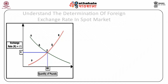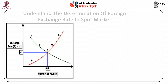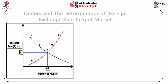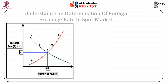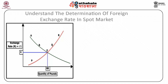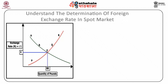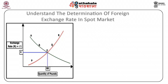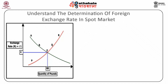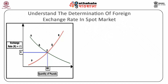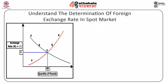The equilibrium exchange rate is determined by the intersection of demand and supply curves for pounds at point E, that is, at R equals four. At this point, the quantity of pounds demanded and the quantity of pounds supplied are equal to 80 million pounds per day.